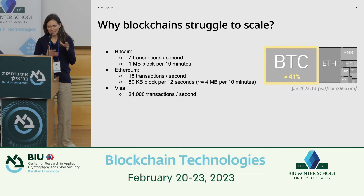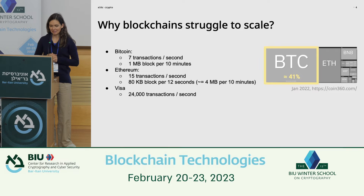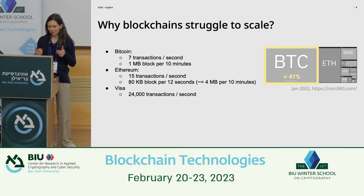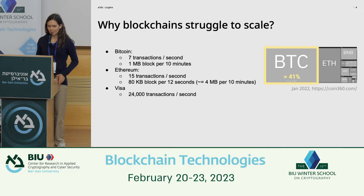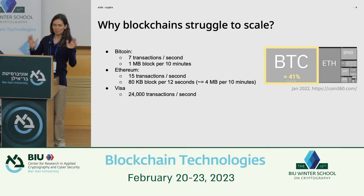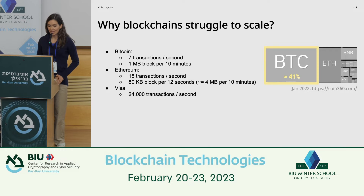As you may have heard, blockchains still struggle to scale. But at least now we have a concrete path forward — a plan. Right now, the Bitcoin network can only confirm seven transactions per second, creating about one megabyte per block every 10 minutes. Ethereum is not much better: about 15 transactions per second with an 80-kilobyte block every 12 seconds, which works out to about four megabytes per 10 minutes. But all of that is nothing compared to Visa, which handles thousands of transactions per second.